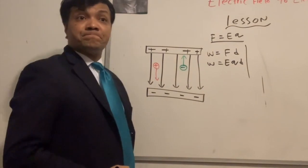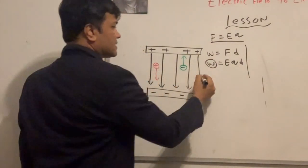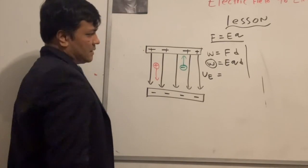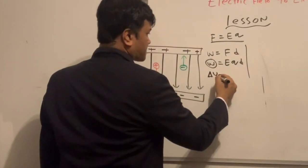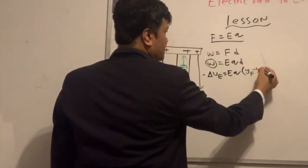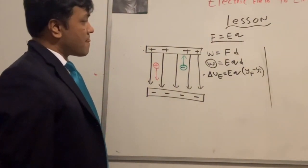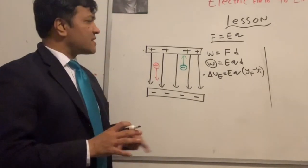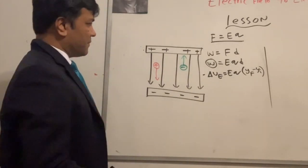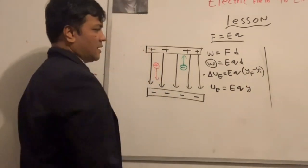What is d? It's y-final minus y-initial. So work relates to change in electric potential energy: W = Eq(y_f − y_i). But why is electric potential energy sometimes negative? I'm going to use a gravitational analogy to help you understand.